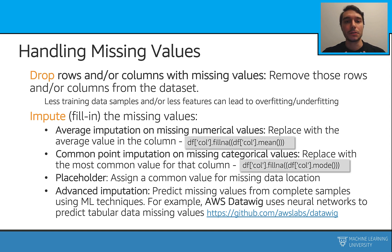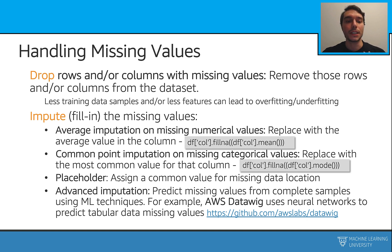Another way to deal with this is actually fixing it, so we can impute or fill in some of the values for these missing ones. We are also going to look at some examples from data frames and the scikit-learn library. For the numerical missing values, we can apply average imputation. In this, we are going to replace the values with the average value in that specific column.